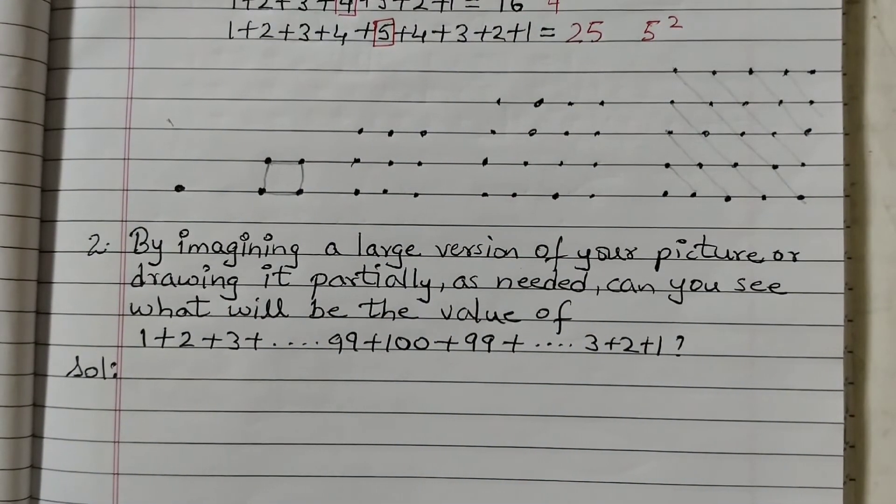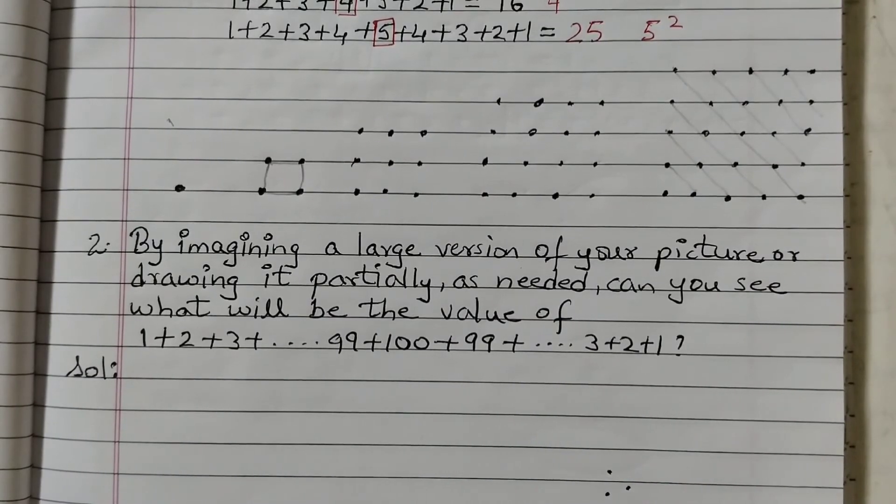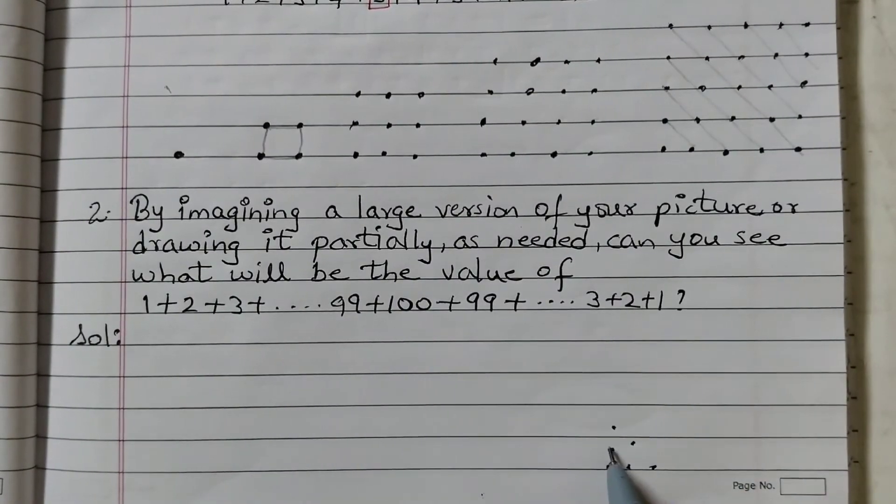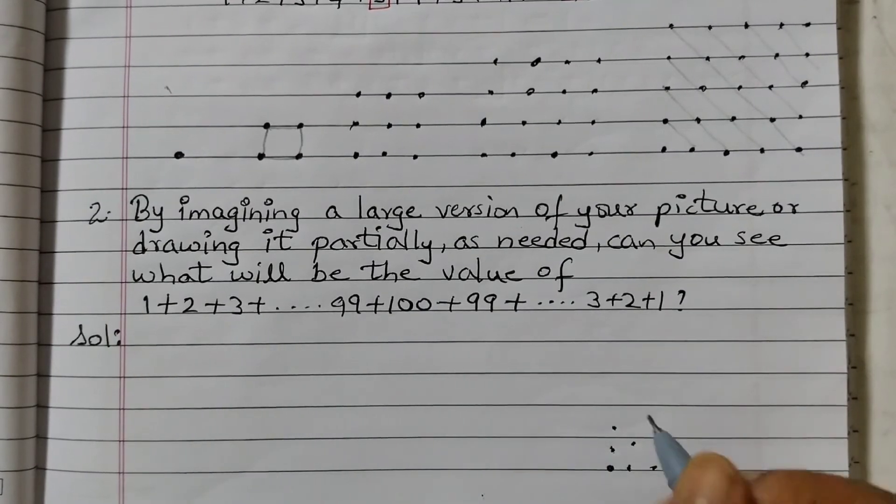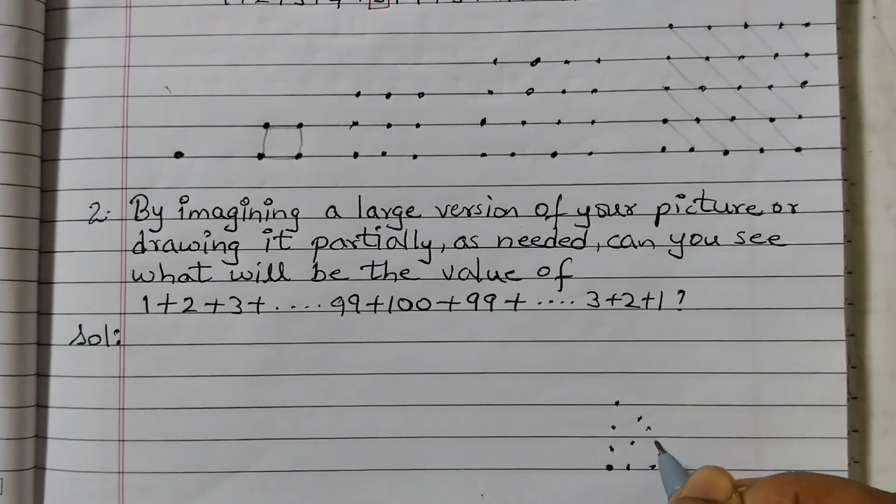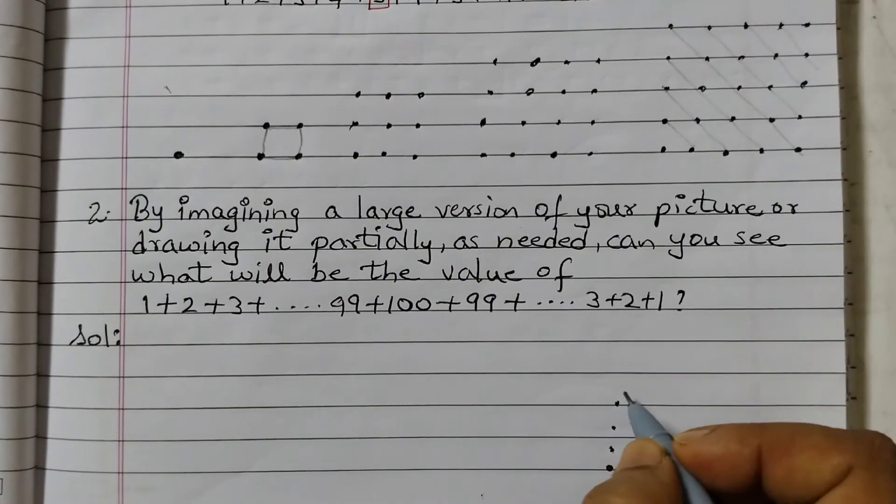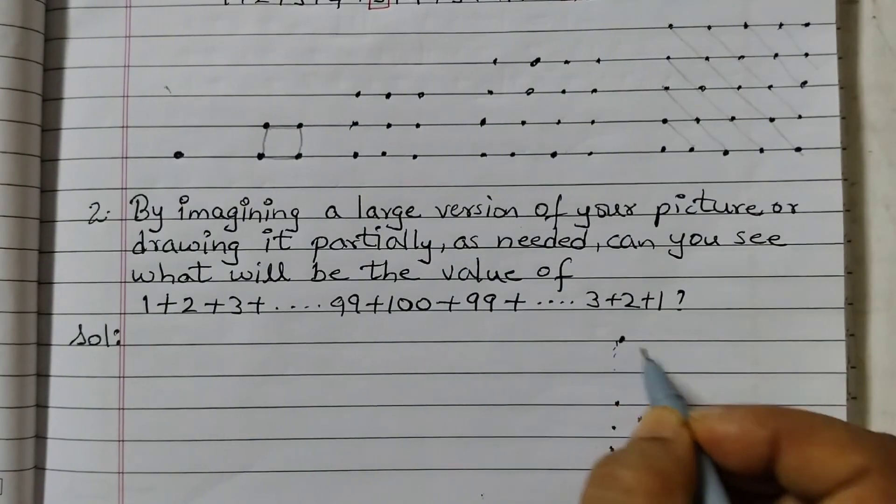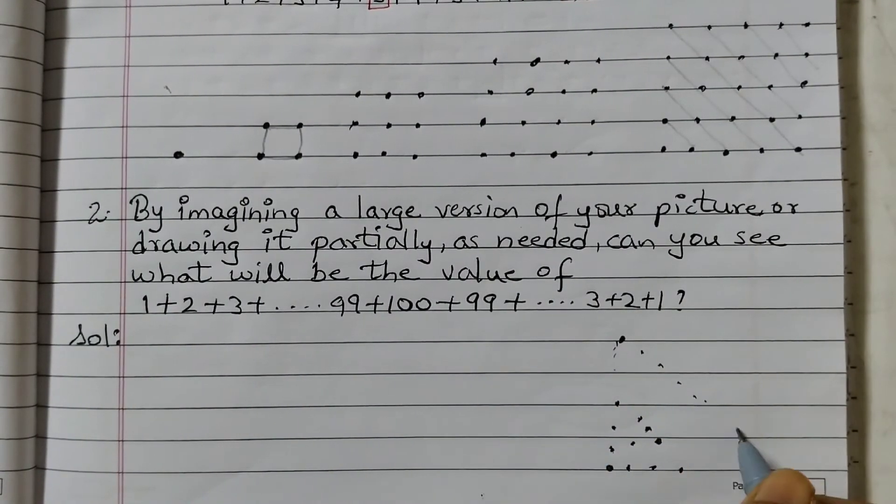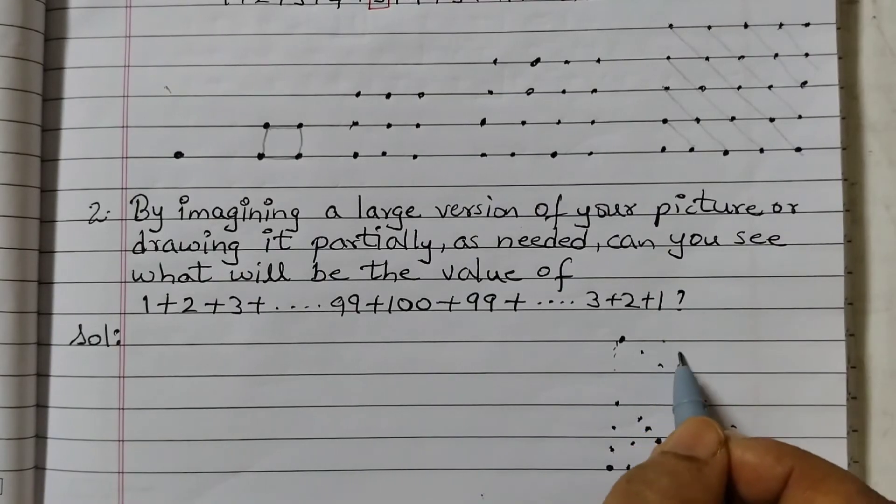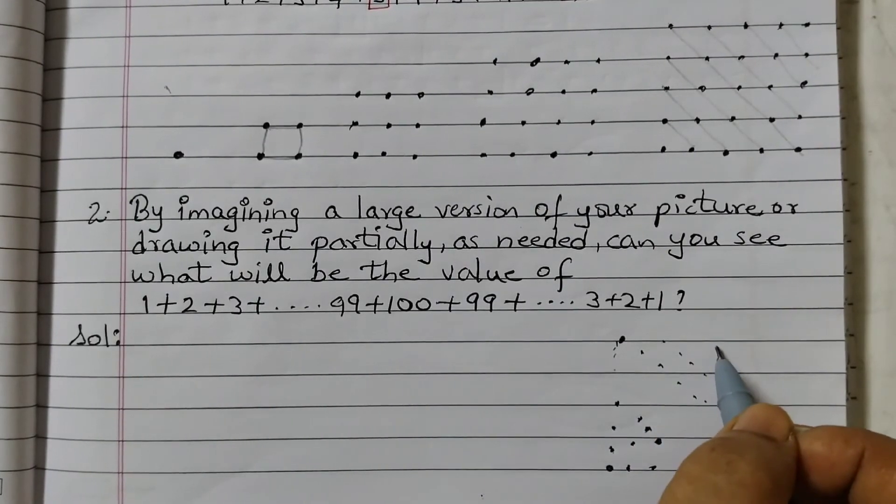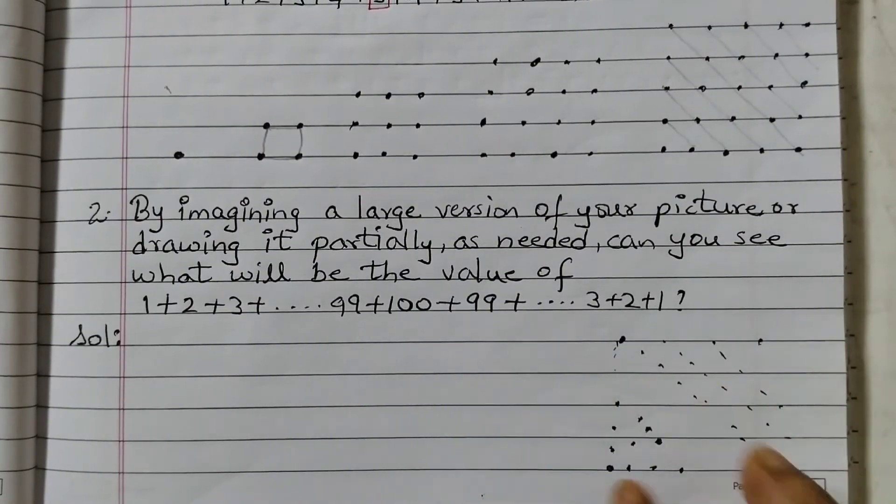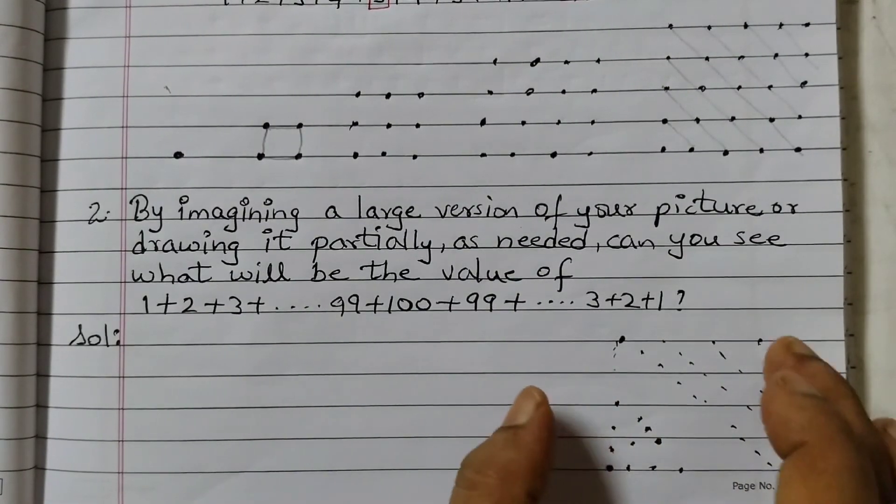So we will just draw it and see what it would be. We can just start with 1, then you will have 2, then you will have 3. See this is 1, 2 dots, then 3 dots, then 4 dots. 4 dots like that and suppose we are going up till like this and then we say here in this line we have 100 dots. 100 dots and then going backwards 99 dots and then going back to 1. This is just a partial drawing, this is not a proper one.